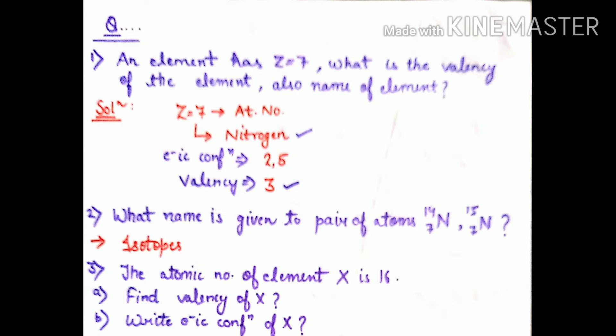Question number 2: What name is given to the pair of atoms nitrogen-14 and nitrogen-15? You can see these two have the same atomic number but atomic masses are different. When atomic number is the same and atomic masses are different, these are called isotopes.